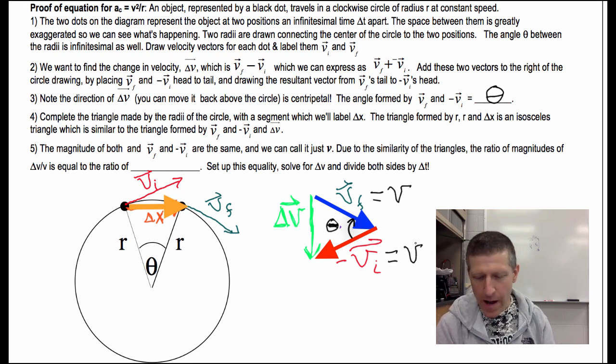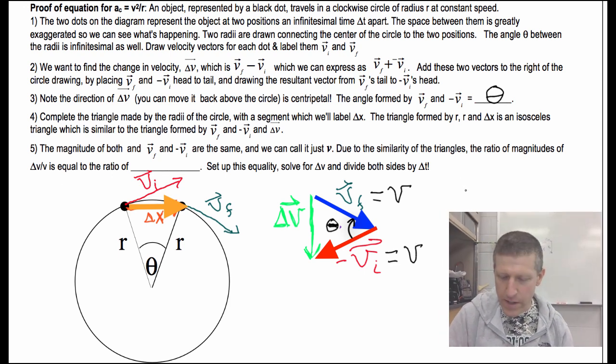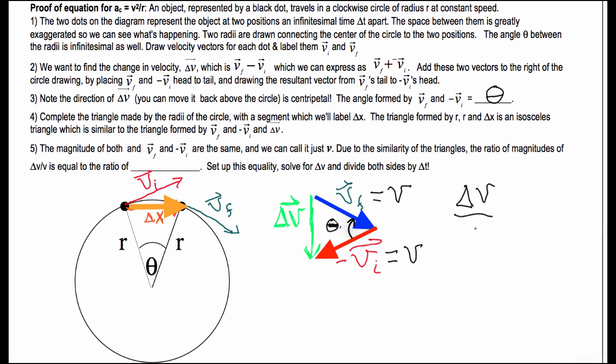And next, I'm going to set up an equation based on the similarity of these two triangles. The ratio of the magnitude of delta V to V. So delta V magnitude to V is equal to, here's the question, what two sides are the corresponding sides on this triangle? Aha, because the V is the sides right here, I guess they call them the legs of the isosceles. So this is the leg, and this is the opposite of theta. That's going to be, same over here, delta X over R.